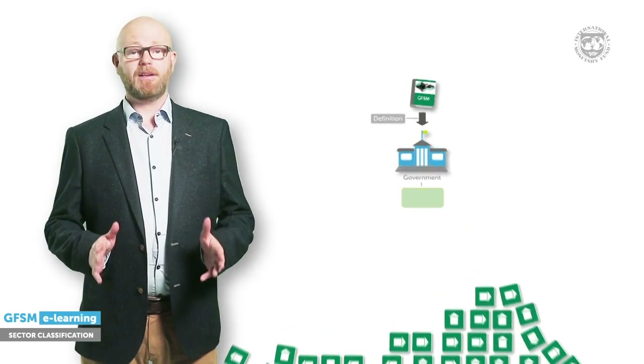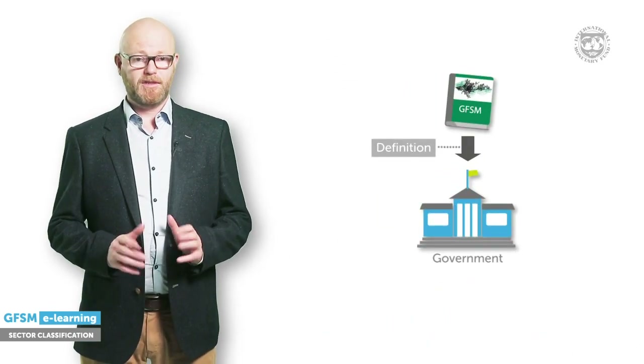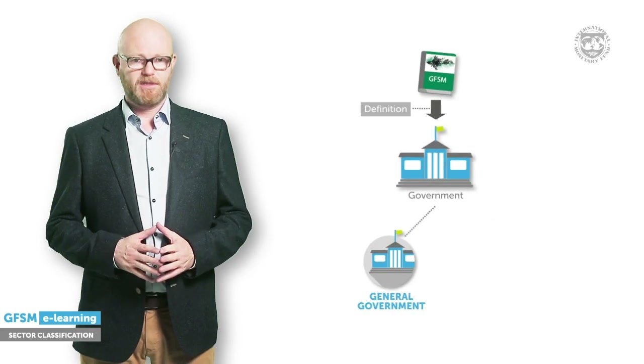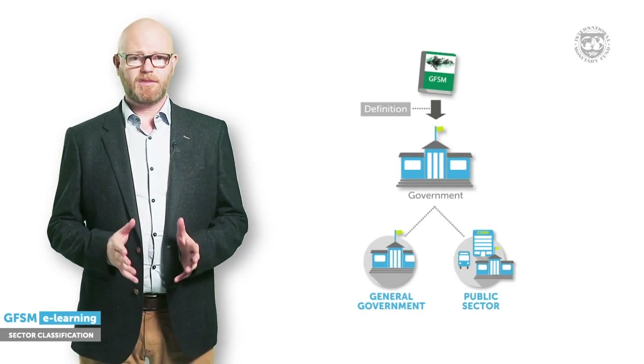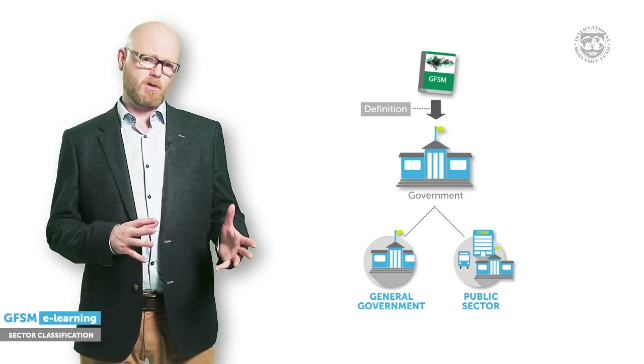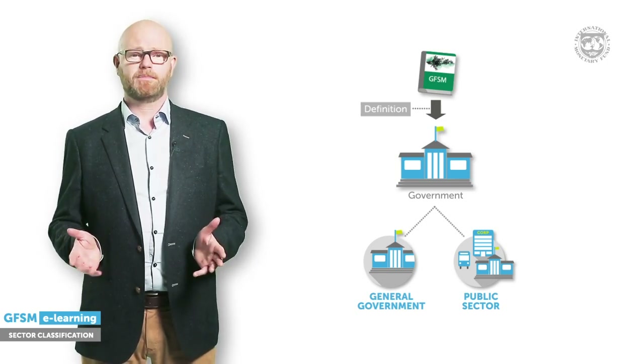I will now explain how GFSM defines two fiscally relevant reporting sectors: the general government sector and the public sector. The public sector is an extension of the general government sector and includes public corporations such as national airlines and post offices. The compilation of macroeconomic statistics usually starts from a register of all relevant entities. This list should be used for the compilation of GFS and for other economic statistics, such as the national accounts or balance of payments. How is this list established and how are the units classified into one or the other sector?